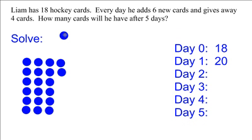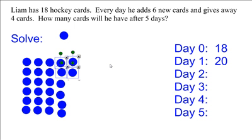Now we're on to day two, so he's going to get another six cards: one, two, three, four, five, six. And he'll give four away. How many cards does he have all together now? Well, we've got three columns of six, so three times six is eighteen, plus four more: eighteen, nineteen, twenty, twenty-one, twenty-two.